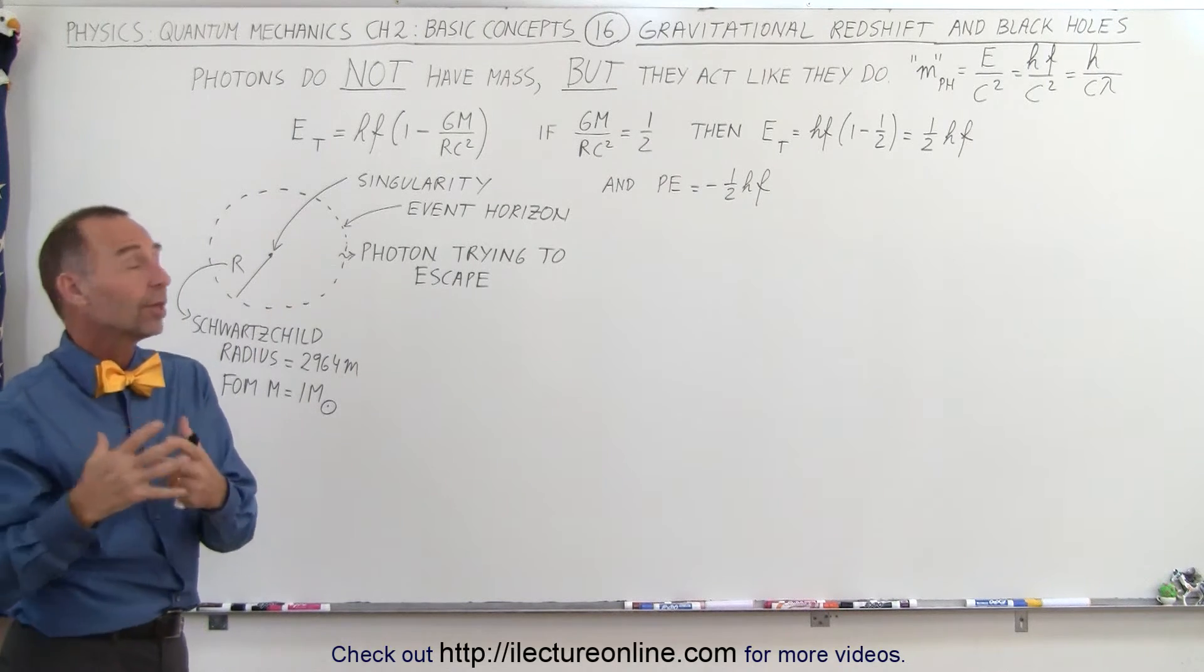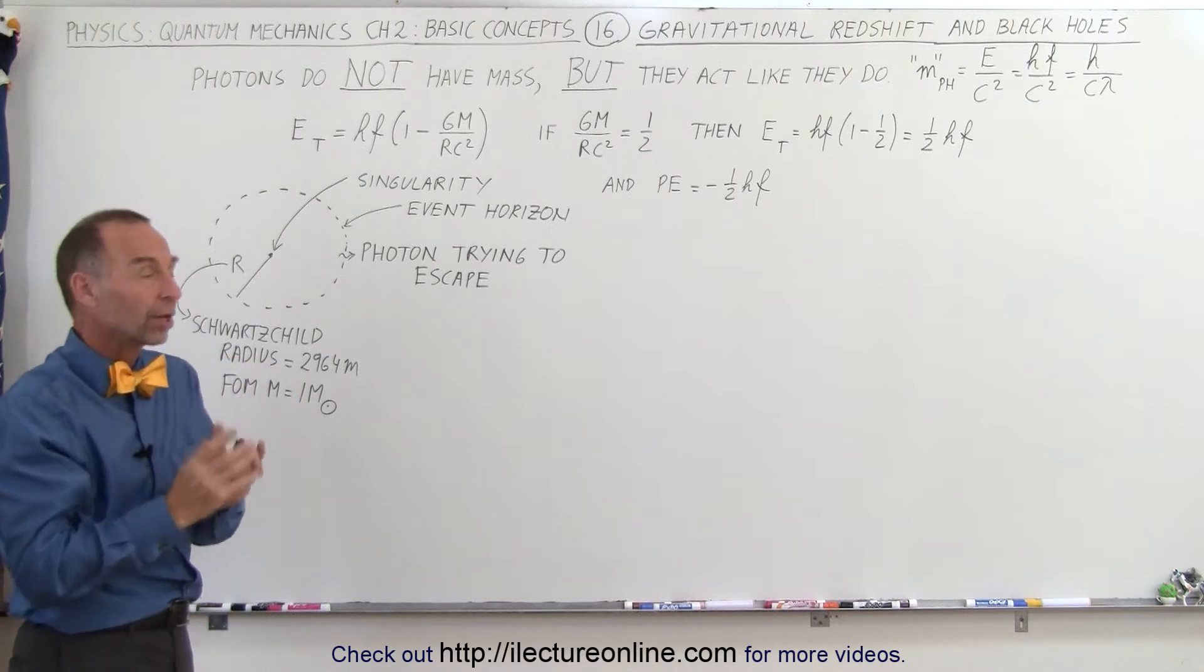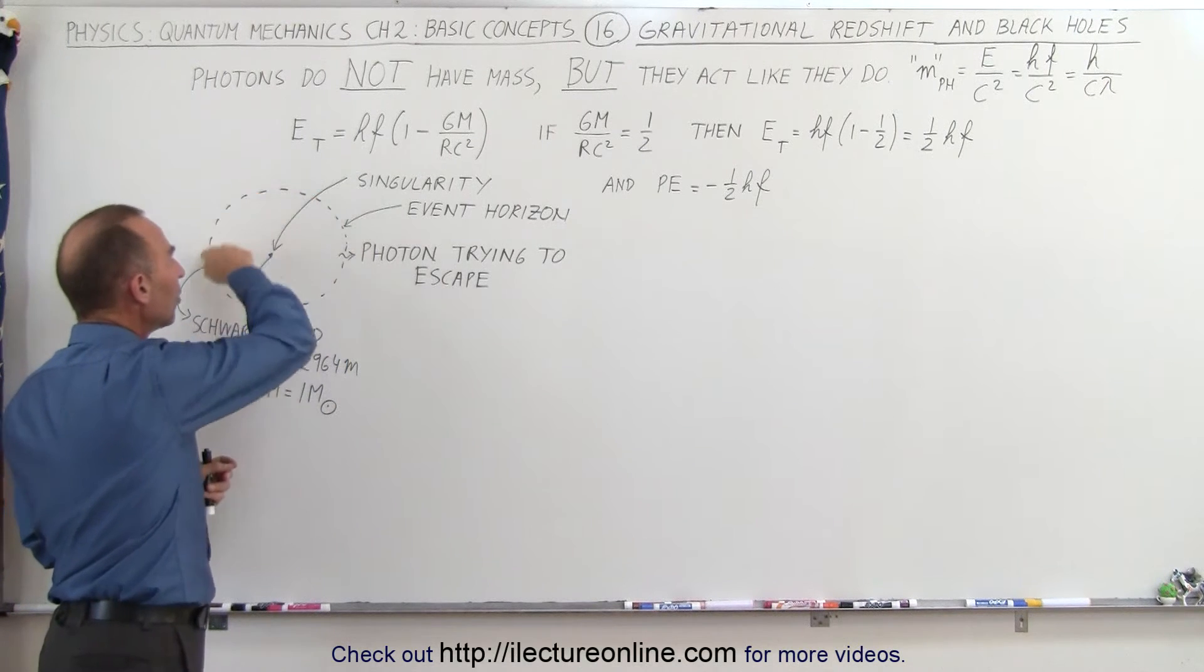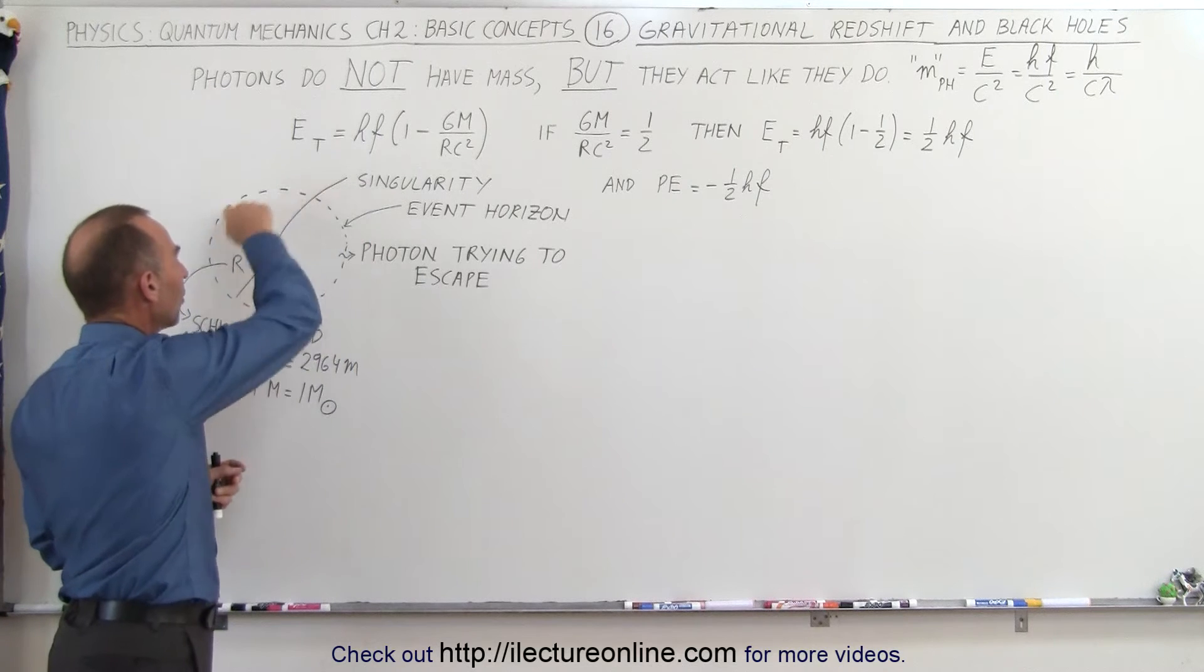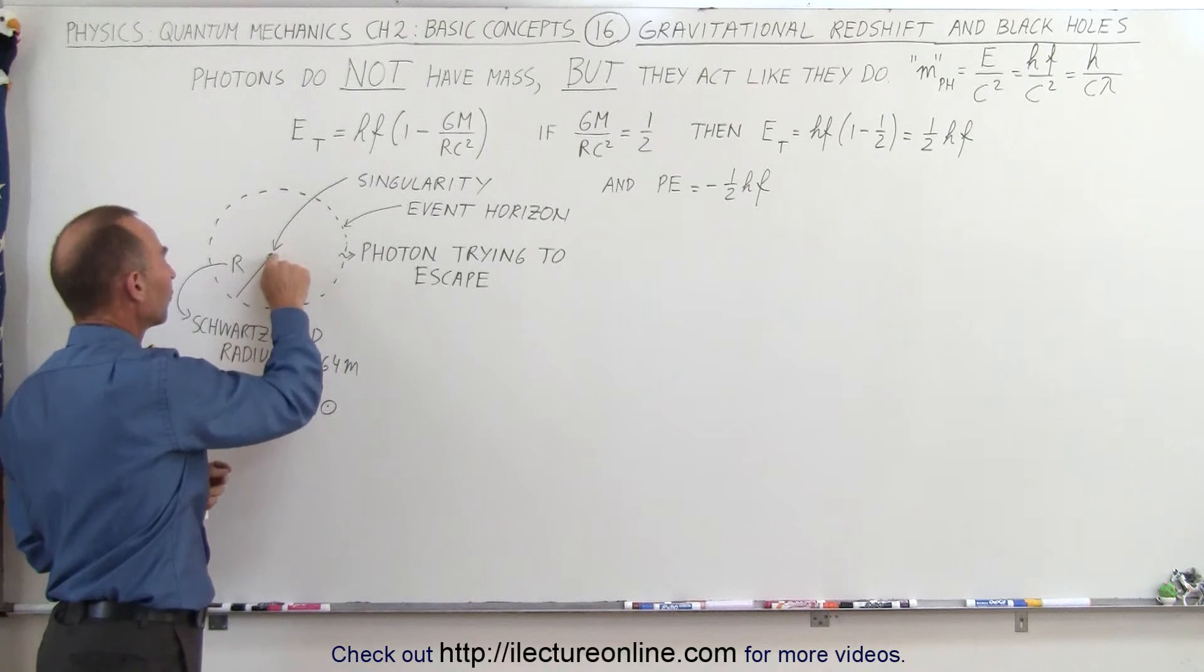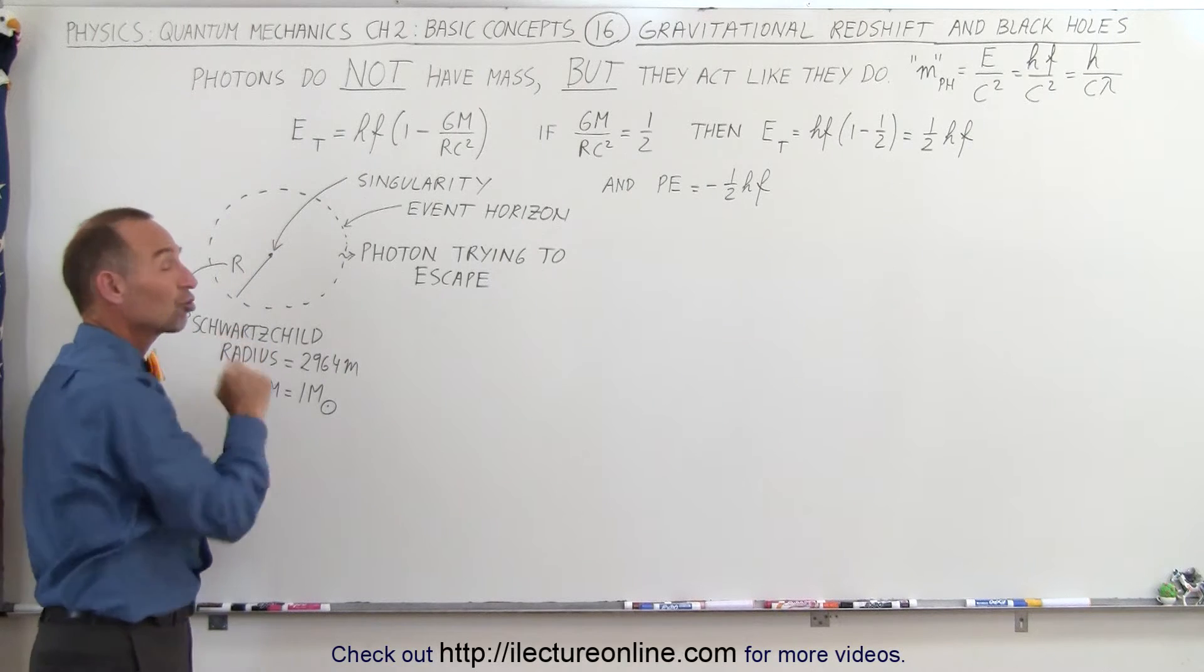And let's assume for a moment that the mass there is equal to the mass of the Sun. Typically there will be much more than the mass of the Sun, but just so we can work out the numbers, let's assume that it contains the mass of the Sun. There will be an event horizon around that small singularity, and the distance to the event horizon from the singularity is called the Schwarzschild radius.